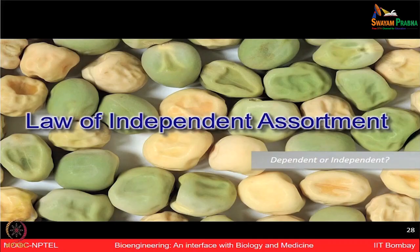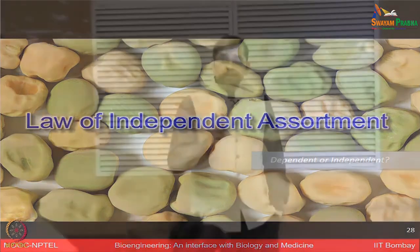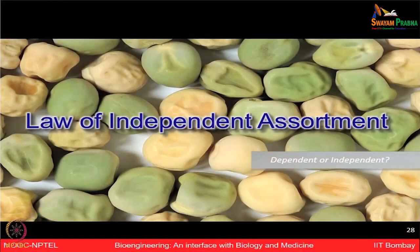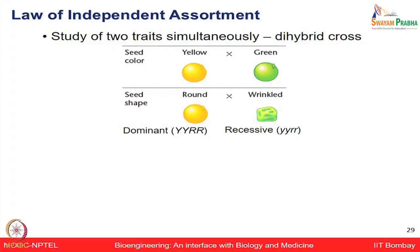That brings us to the second law of Mendel: the law of independent assortment. Mendel was doing experiments and making observations, and only after looking at many experiments giving the same ratios was he able to formulate certain rules. He started thinking about studying not just one characteristic but two genes and two different properties with different allelic forms — for example, seed color and seed shape.